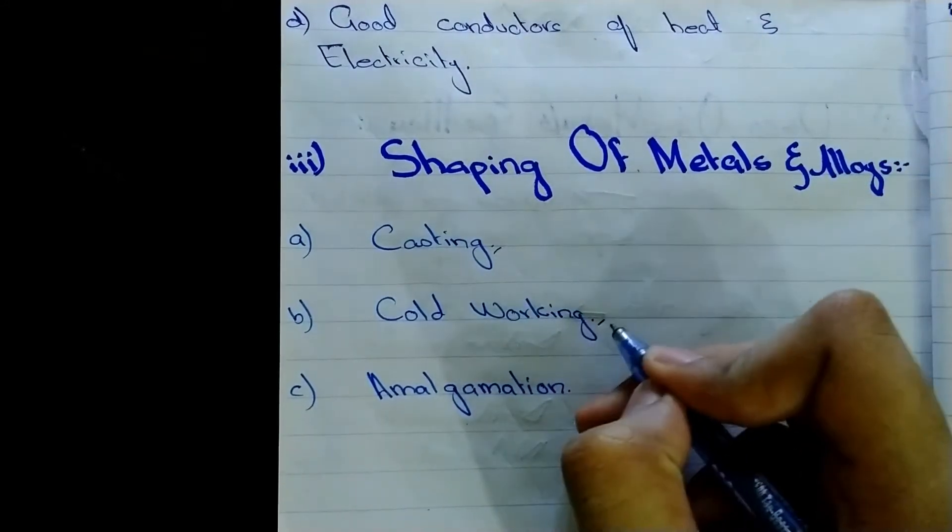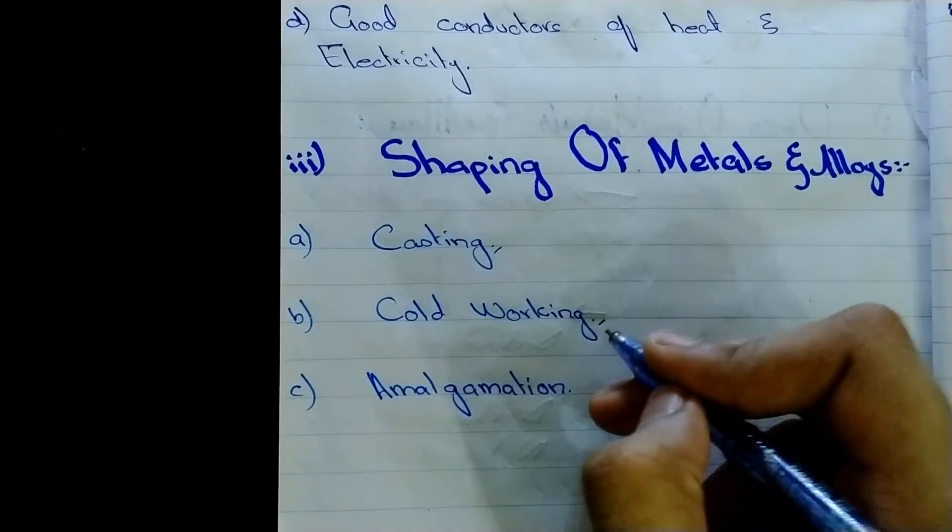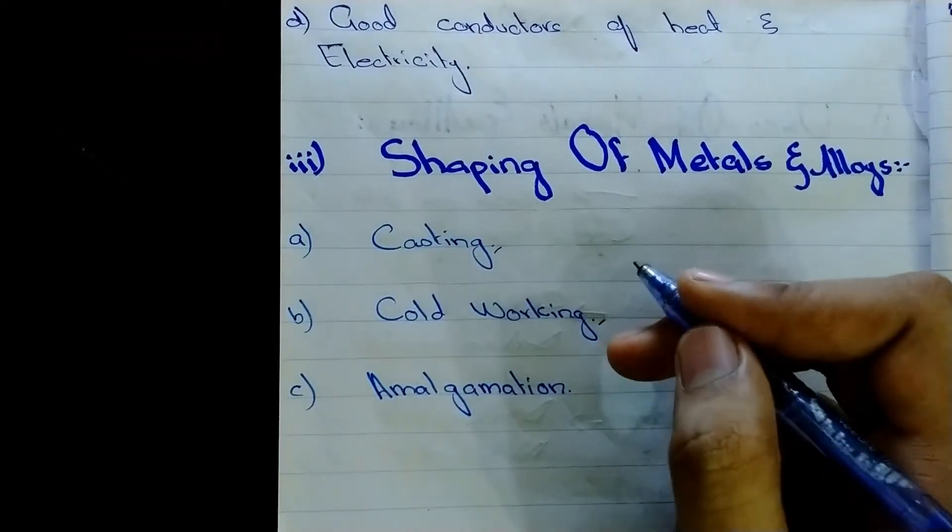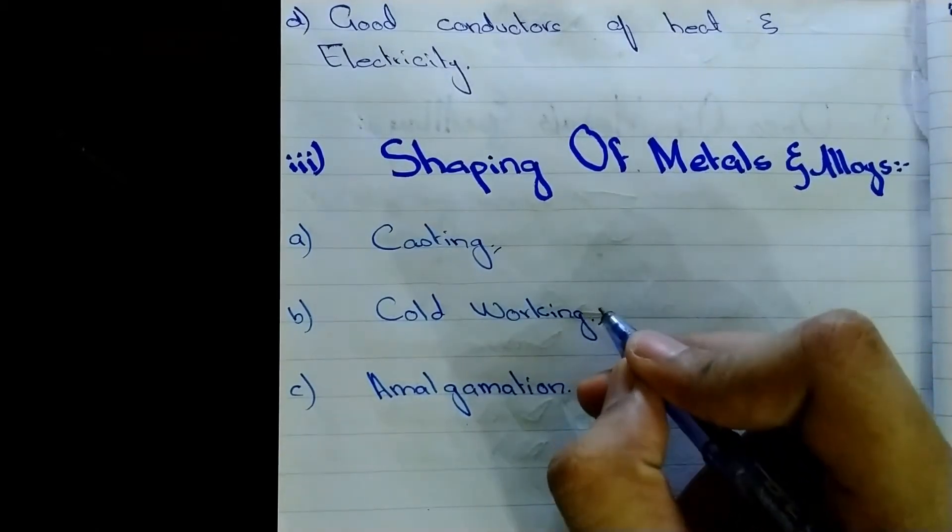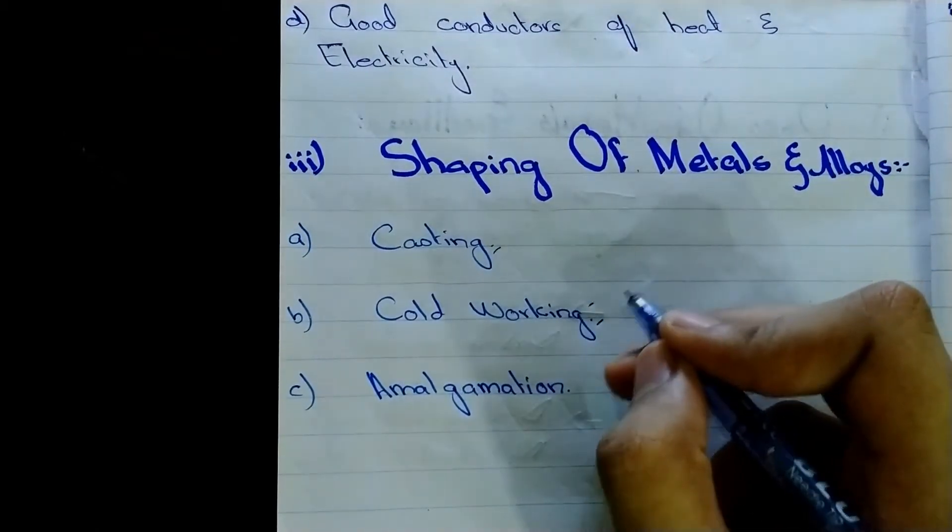And then the cold working. Basically, cold working is the mechanical shaping of the metals and alloys at relatively low temperatures. We will discuss about cold working later in this chapter in the details.